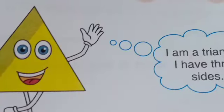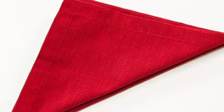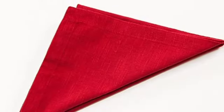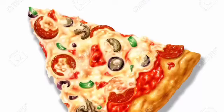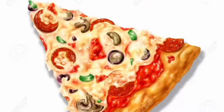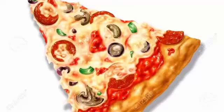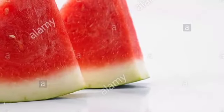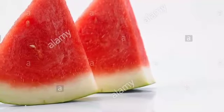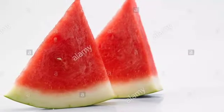How many sides does a triangle have? The triangle has three sides. Here are some examples of triangles. The first one is a napkin — when you fold a napkin, you get the shape of a triangle. The next example is pizza — a pizza slice is in a triangle shape. And the next one is a watermelon slice, which also has a triangle shape.